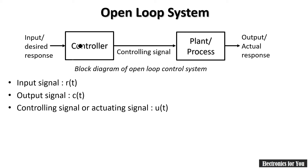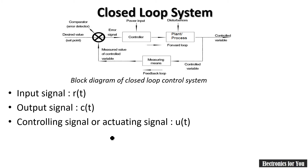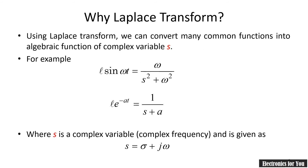We have already seen the open loop system. Here, if the input signal is indicated by r(t), the output signal is indicated by c(t), and the control signal is indicated by e(t). Now we take the ratio of the Laplace transform of output and input. The question is: why do we consider Laplace transform in the case of a control system?